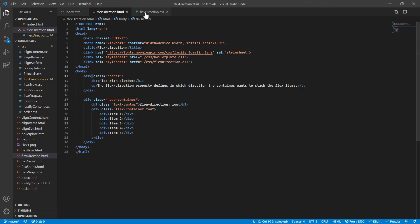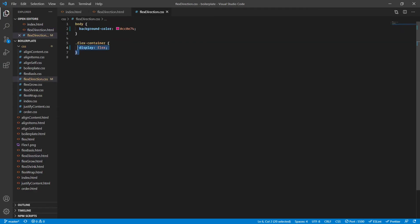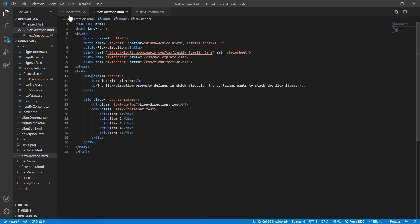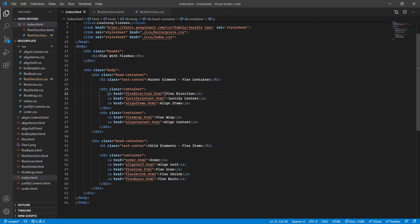So we can directly go to the flex direction and start working on the flex direction property or any other property. And then we will write the code, the style sheet, the CSS code, completely from scratch.